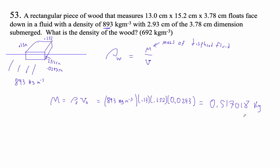Okay, so now we're set. Now we just have to divide by the volume. But the volume is easy. It's just this times this times this. So let's go ahead and do it. The density of the wood is the mass, which is 0.517018 kilograms, divided by the volume, which is 0.13 times 0.152. It has to be the whole volume. Divide it times 0.0378.